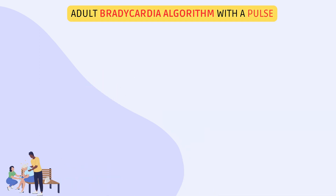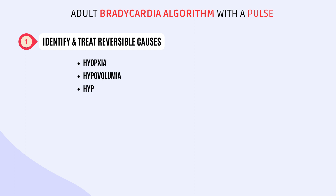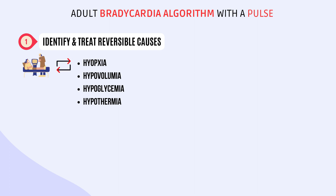Let's take a closer look at each step of the algorithm. Step 1: Identify and Treat Reversible Causes. The first step is to identify and treat any reversible causes of bradycardia, such as hypoxia, hypovolemia, hypoglycemia, or hypothermia. We need to check the patient's oxygen saturation level and adjust the oxygen flow if necessary. We should also check the patient's blood glucose level and correct it if it's too low.